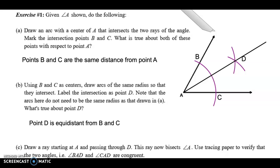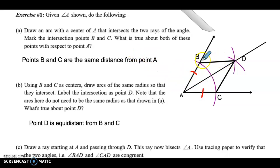I just want to show you something — I'm going to draw a line connecting B to D and a line connecting B to C. I now have two triangles: triangle ABD on the top and triangle CAD on the bottom. Those triangles are congruent to each other. B and C are the same distance from A, and B and C are the same distance from D, and they share side AD in the middle. Therefore those triangles are congruent, and that's why these angles are congruent by CPCTC, so angle BAD is congruent to angle CAD.